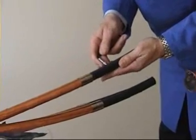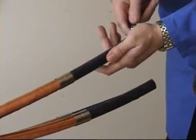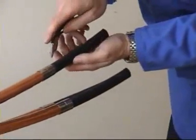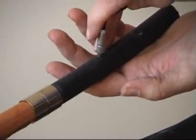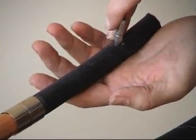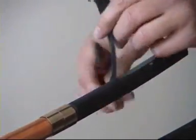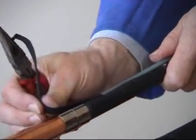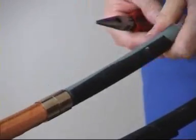Use a semi-conductive scoring tool and score the cores longitudinally, as shown. Make sure the tool is set to the right depth, so as not to score the primary insulation. Peel back the semi-conductive layer, which should snap off at the screen cut.